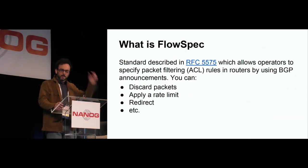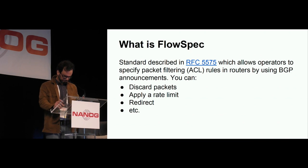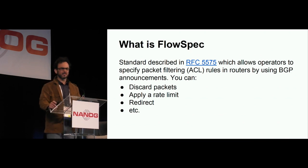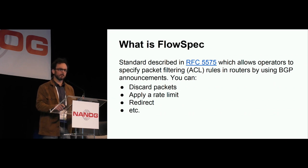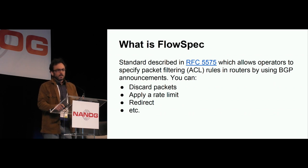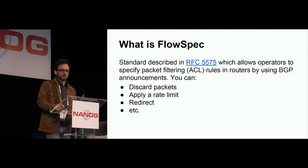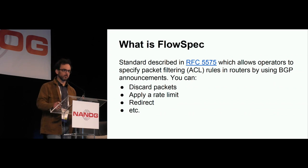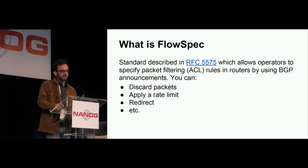So what is FlowSpec? Because that's where I'm going. FlowSpec is a standard. It's been around, I think, from 2009. There's an RFC that you should read about it. It allows you to specify not routes, but filter specifications or ACLs, basically. Based on those ACLs, you have the option to do several operations on packets that match the ACL. You can discard them, you can apply a rate limit, you can redirect the packets to a different routing instance, et cetera. It's very cool.